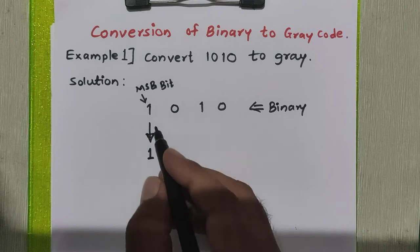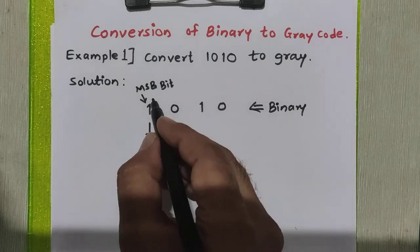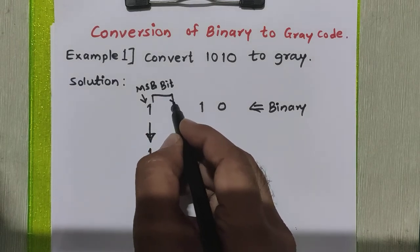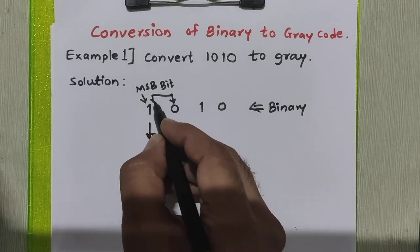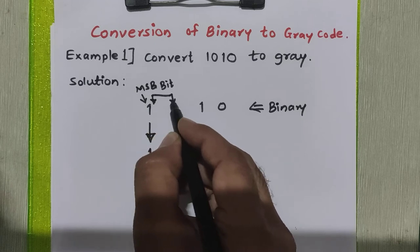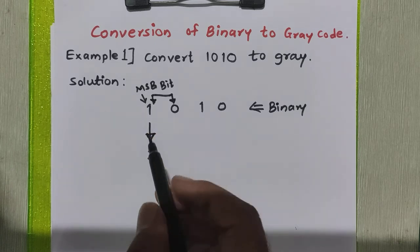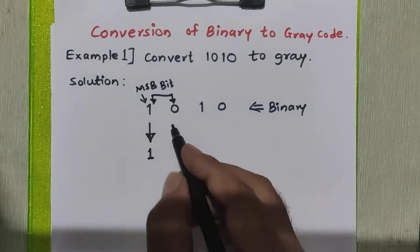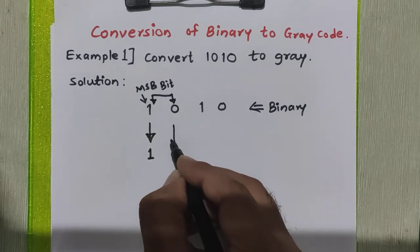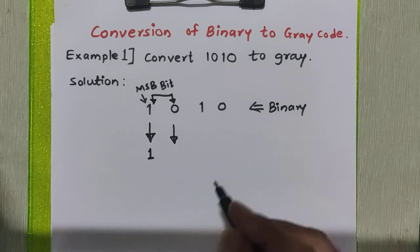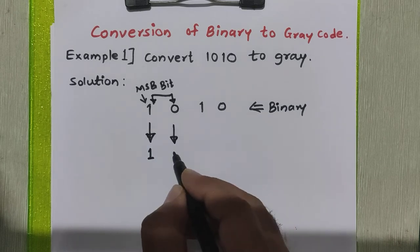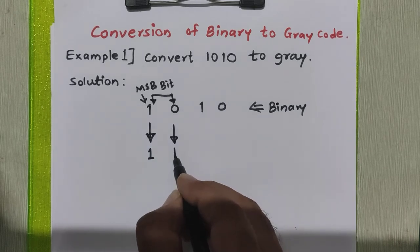To obtain the second bit of the grey code, we have to add the first binary bit with the second binary bit. So 1 plus 0 is 1.